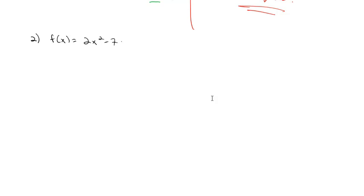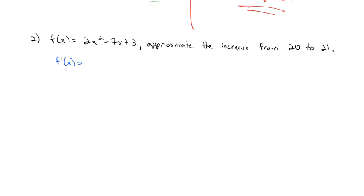So if the function is 2x squared minus 7x plus 3, and I want to approximate the increase from 20 to 21, it's much quicker to take the derivative using our polynomial rule, which gives 4x minus 7, and then plug in 20: 4 times 20 minus 7 is 80 minus 7, which is 73. We get approximately 73 more when going from 20 to 21. It's not exact, but it is very close, and in the context of marginal change, close is good enough.